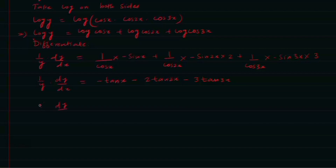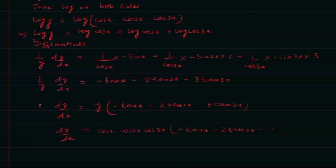Now we find dy/dx. dy/dx = y·(−tan x − 2 tan 2x − 3 tan 3x). Substituting y = cos x · cos 2x · cos 3x, the final derivative is dy/dx = cos x · cos 2x · cos 3x · (−tan x − 2 tan 2x − 3 tan 3x).